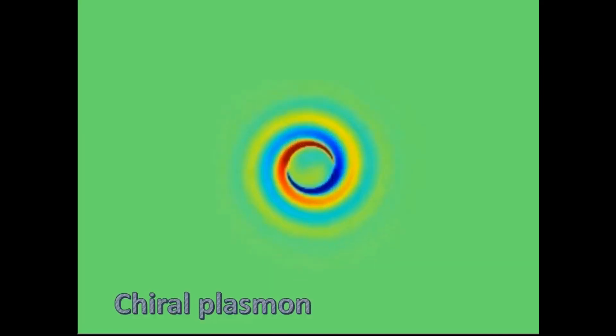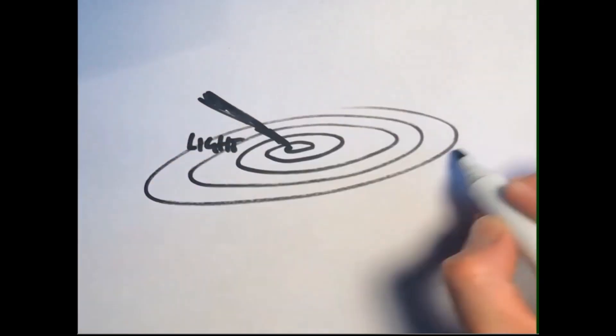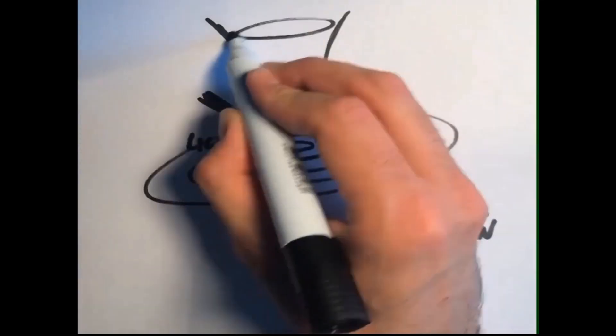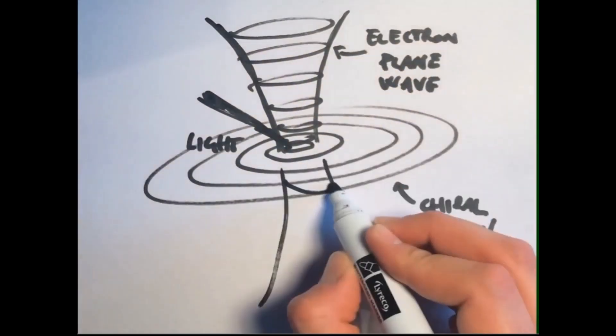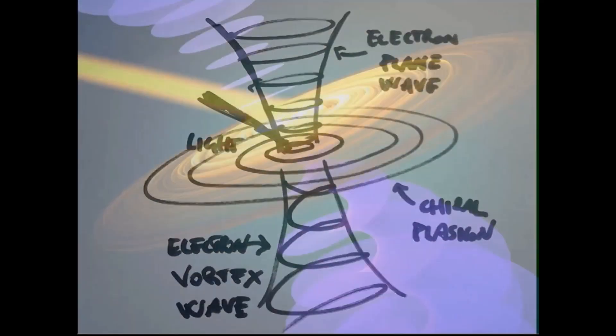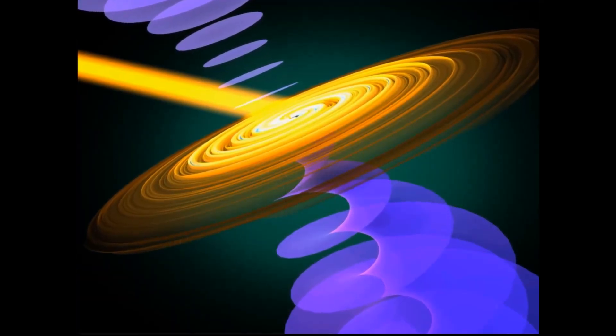First, they prepared a chiral plasmon, which is a localized electric field configuration carrying orbital angular momentum. Then, they made this chiral plasmon interact with femtosecond electron pulses. What they discovered was that, during the interaction, the wave function of the electrons takes on a vortex modulation, as a result of a very fundamental rule of nature: energy and momentum conservation.